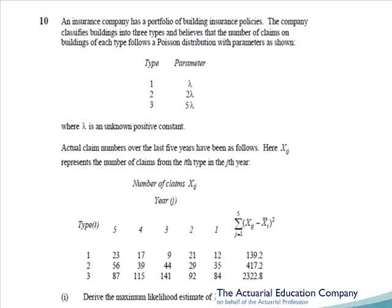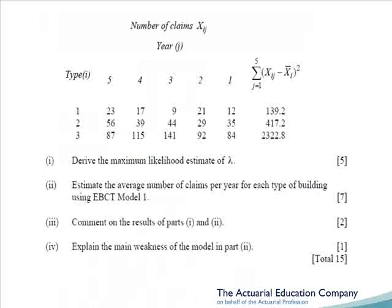Question 10 tests both maximum likelihood estimation from chapter 3, and EBCT model 1 from chapter 6 of the notes. Claims have a Poisson distribution but different types have different parameters. We'd have to obtain the likelihood of lambda: the probability of obtaining the given claims for type 1 (Poisson lambda), times the probability for type 2 (Poisson 2 lambda), times the probability for type 3 (Poisson 5 lambda). Part 2 involves EBCT model 1 — given that all formulae are on page 29 of the tables, this should have been a very easy 7 marks. You estimate the premiums by multiplying the credibility factor Z by the mean claims for each type, plus 1-Z times the overall claims. Part 4 asks for the main weakness of EBCT model 1 — easy bookwork marks to quote that it doesn't consider the volume, in this case the number of buildings covered.